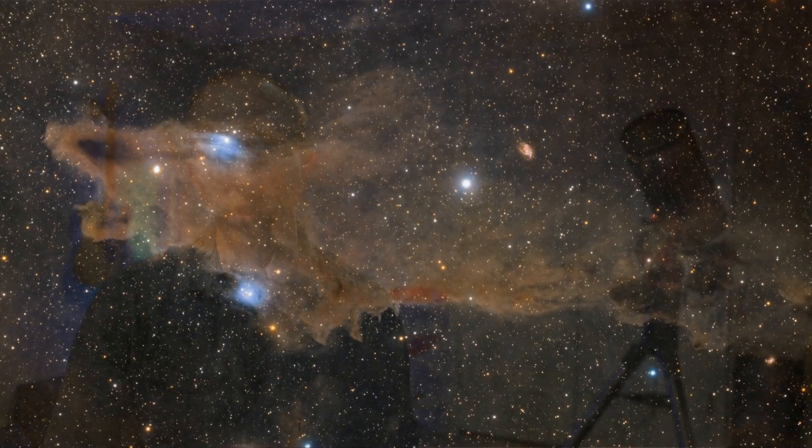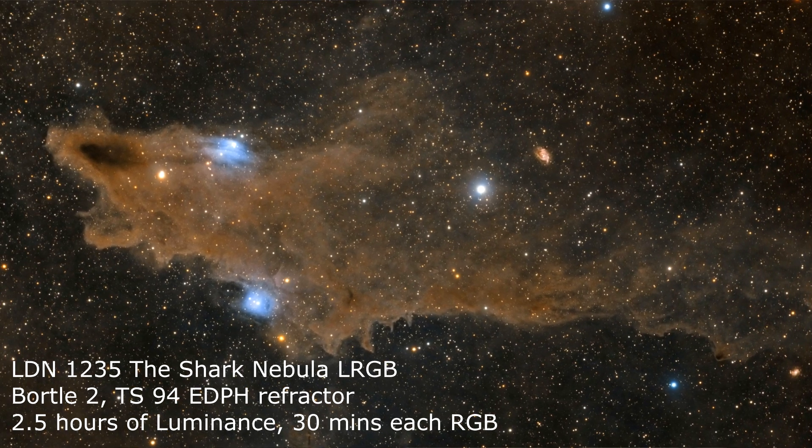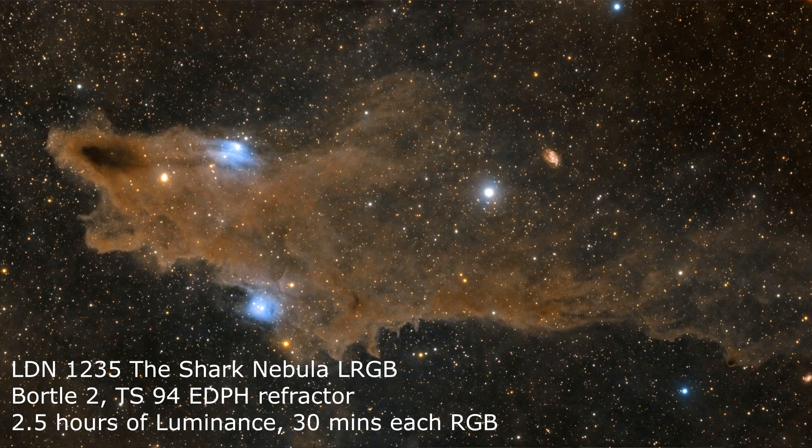Tip number two, pick reasonable targets. This is pretty straightforward. You need to choose acquirable targets from your amount of light pollution. Now don't get me wrong, I love the dusty dark targets in Cepheus, such as the dark shark or the seahorse nebula, but I'm also realistic about how difficult these objects are to image from light pollution.